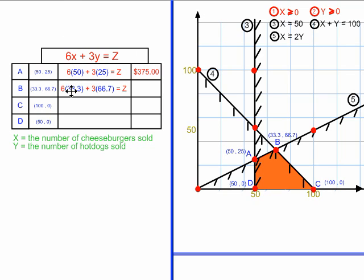In vertex B, 6 times 33.3 is $200, and 3 times 66.7 is also 200. So they total $400.